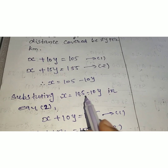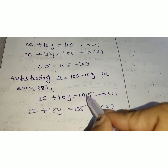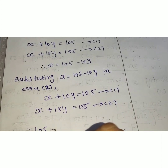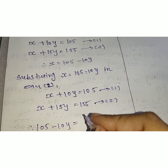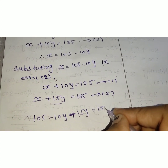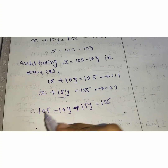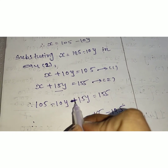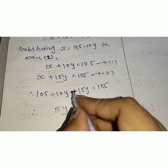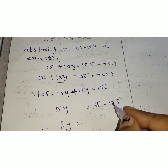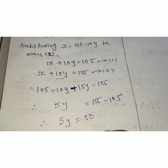Substituting x = 105 − 10y in equation 2: (105 − 10y) + 15y = 155. Therefore, 105 − 10y + 15y = 155. So 105 + 5y = 155. Moving 105 to the other side: 5y = 155 − 105 = 50.